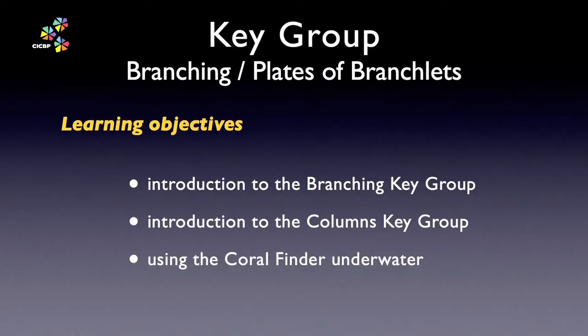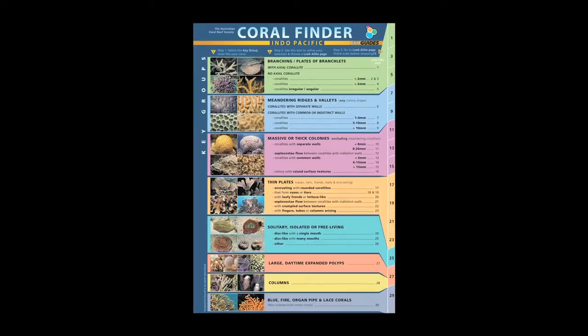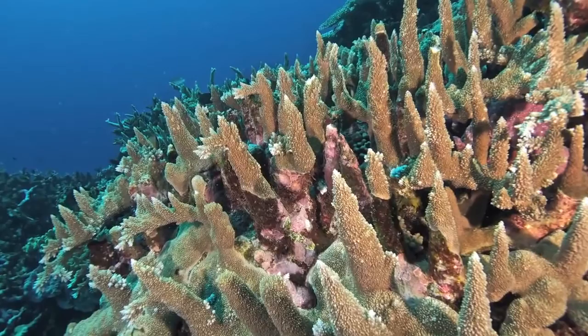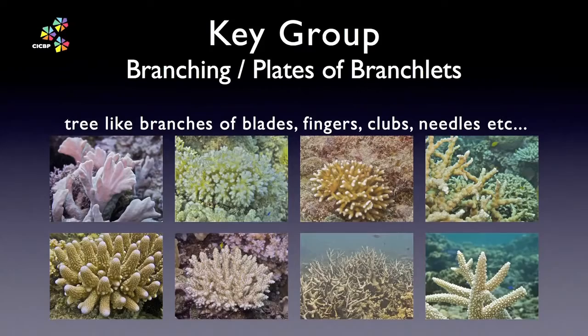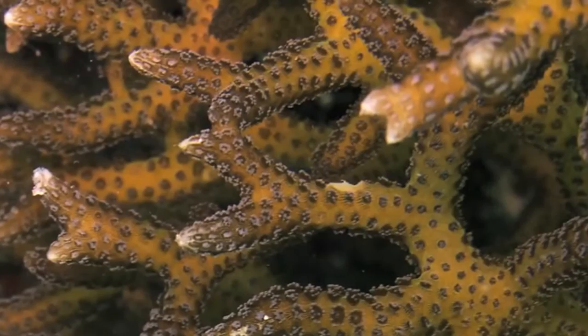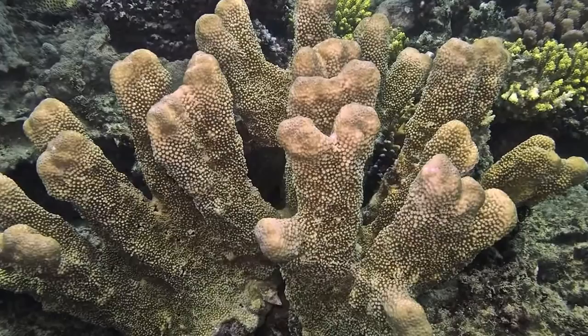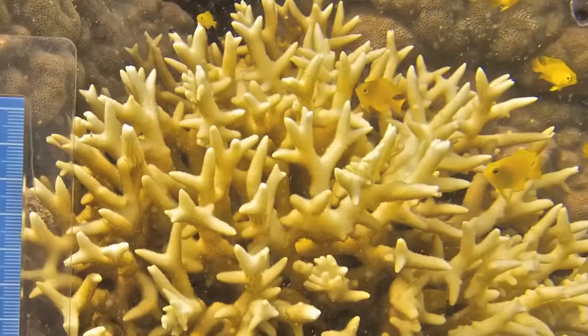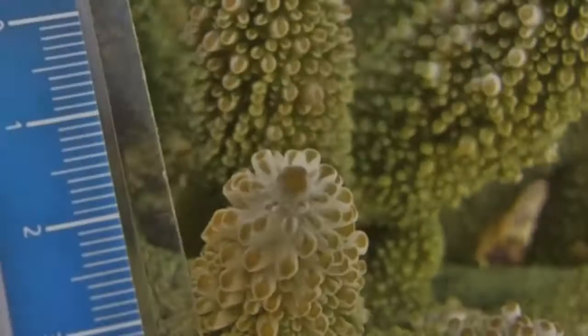Now it's time to explain how the Coral Finder key groups work, and we'll use the branching key group as a worked example. In the coral world, branching corals can take on many forms and almost any conceivable texture. The Coral Finder's definition of branching is fairly broad and includes branching in all its forms — from needles, through fingers, to clubs and blades. Likewise, the scale of what is considered to be branching can also vary from centimetres to over a metre.